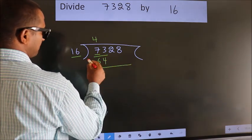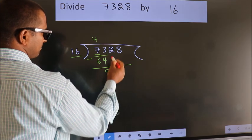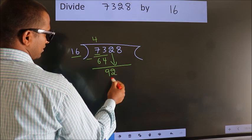Now we should subtract. We get 9. After this, bring down the beside number. So 2 down. So 92.